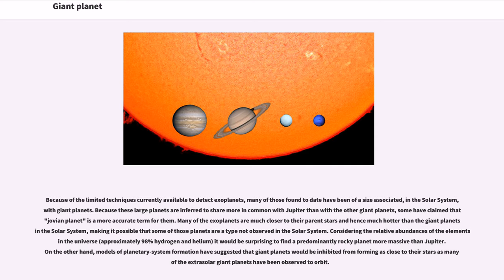Because of the limited techniques currently available to detect exoplanets, many of those found to date have been of a size associated, in the solar system, with giant planets. Because these large planets are inferred to share more in common with Jupiter than with the other giant planets, some have claimed that Jovian planet is a more accurate term for them. Many of the exoplanets are much closer to their parent stars and hence much hotter than the giant planets seen in the solar system, making it possible that some of those planets are a type not observed in the solar system.